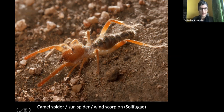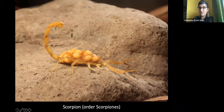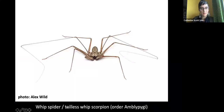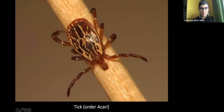Other arachnids include hooded tick spiders, wind scorpions or camel spiders — we may have one species in Canada — and scorpions. The northern scorpion is found in central British Columbia; scorpions give live birth and carry babies on their back. Whip spiders in the order Amblypygi appear in Harry Potter films; we don't have them in Canada. Red velvet mites are found nearly everywhere, and ticks are unfortunately becoming more prevalent in Canada.